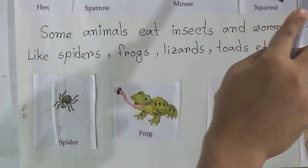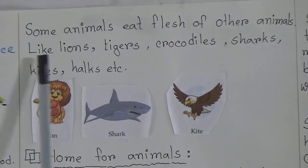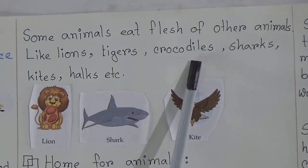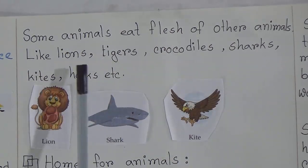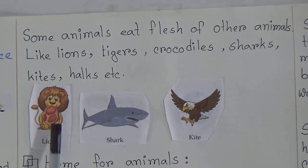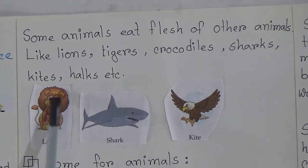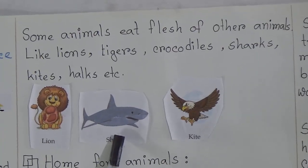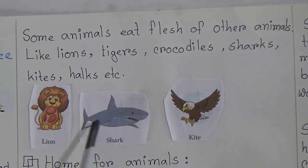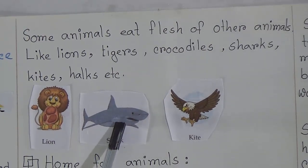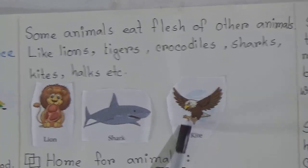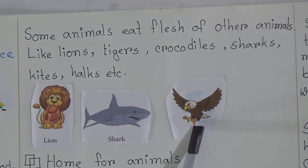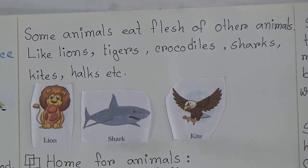Some animals eat the flesh of other animals, like lions, tigers, crocodiles, sharks, and kites. See, that is a picture of a lion with a piece of meat, and that is a shark — sharks eat other fishes, which means they also eat flesh. This is a kite, and the kite also eats the flesh of other animals.